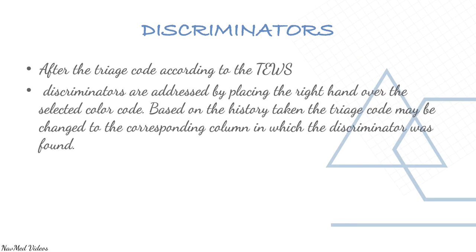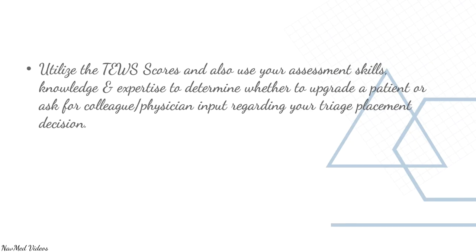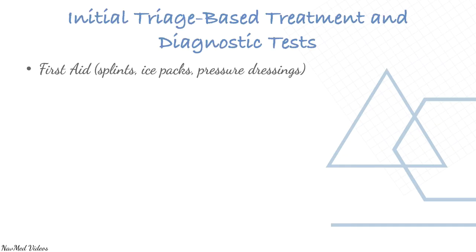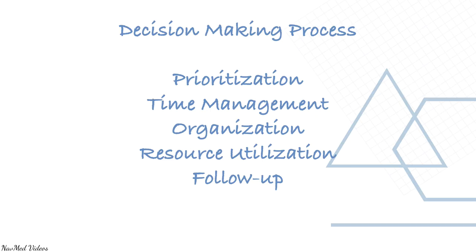After the triage code is determined via TWOS, discriminators are assessed by placing the right hand over the selected color code. Based on the history taken, the triage code may be changed to the corresponding column where the discriminator was found. Use TWOS scores together with assessment skills, knowledge, and expertise to determine whether to upgrade a patient or consult a colleague or physician. Triaging up is essential; triaging down is not the triage provider's duty and must be done by a senior healthcare provider. Initial triage-based treatment includes first aid such as splints, ice packs, pressure dressings, analgesia, and antipyretic control; simple diagnostic aids; and decision-making involving prioritization, time management, organization, resource utilization, and follow-up.